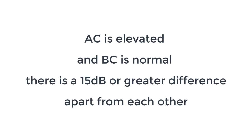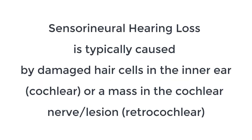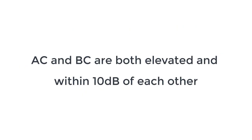In conductive hearing loss, air conduction is elevated and bone conduction is normal — there's a 15 decibel or greater difference apart from each other. For sensorineural hearing loss, it's typically caused by damaged hair cells in the inner ear, the cochlea, or a mass in the cochlear nerve or lesion, which would then be retrocochlear.